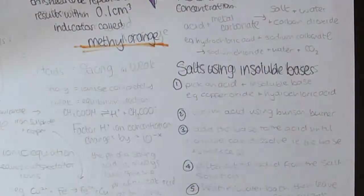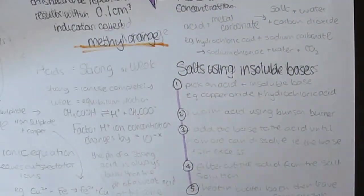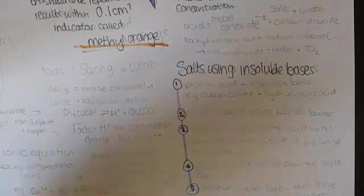Acids and metal carbonates also react to make salt, water and carbon dioxide. For example, hydrochloric acid plus sodium carbonate makes sodium chloride, water and carbon dioxide.